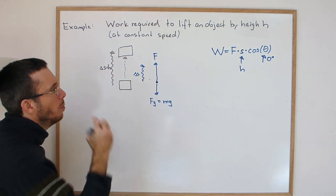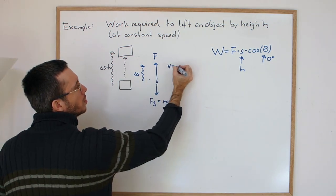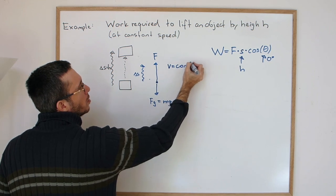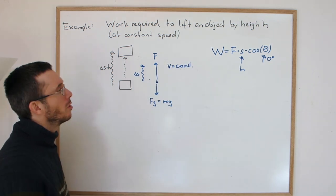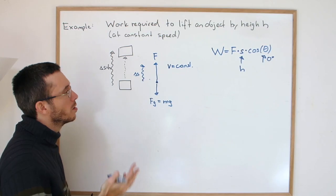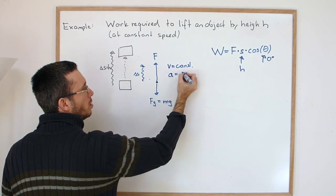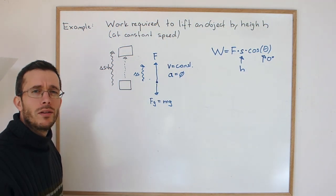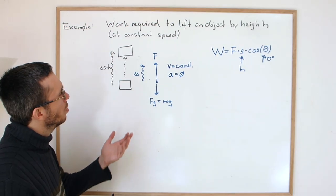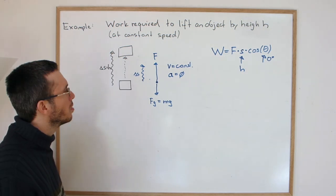Now if I go up at v equals constant, what does that mean for acceleration? Constant velocity means that acceleration is zero. And if the acceleration of an object is zero, what does Newton say about that?